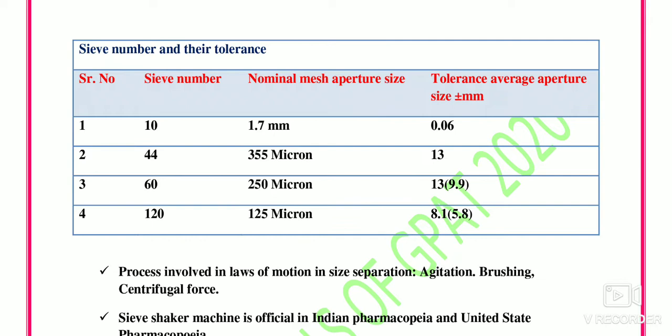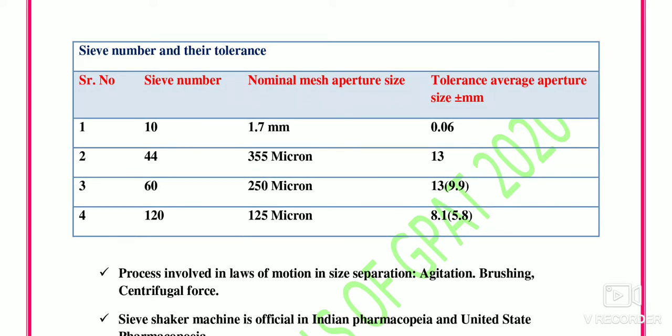Some CU numbers and their tolerances (US tolerance): CU number 10 has a nominal mesh aperture of 1.7 mm with a tolerance of ±0.06 mm. CU number 44 is 355 micron with ±30 micron tolerance. CU number 60 has a mesh aperture of 250 micron with ±13 micron tolerance. CU number 120 has a mesh aperture of 120 micron with a tolerance of ±8.1 micron.